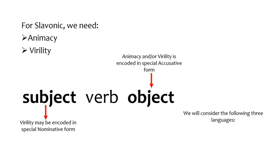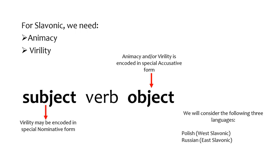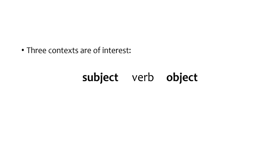We are going to look at three different languages from each Slavonic branch. Polish is our West Slavic representative. From the East Slavic branch we have Russian, and Serbian-Croatian from the South Slavic branch. It is necessary to keep in mind that the discussion here concerns strictly the nominative and accusative case positions, and for ease of exposition we will confine our attention to subjects and direct objects — both singular and plural.